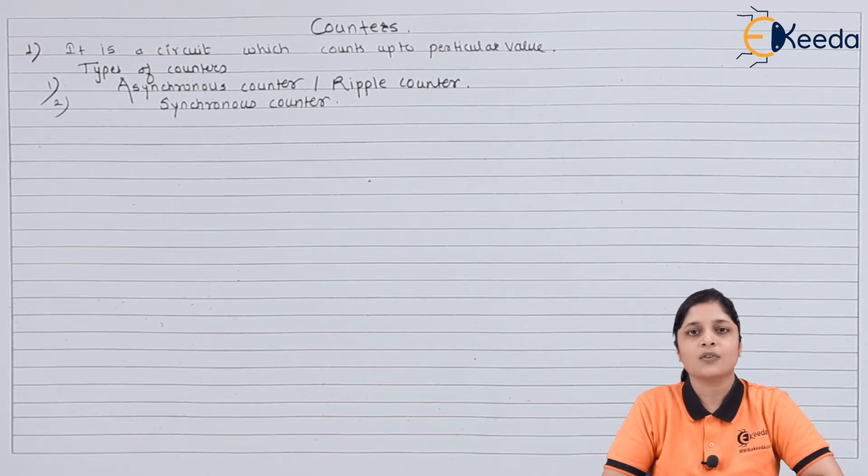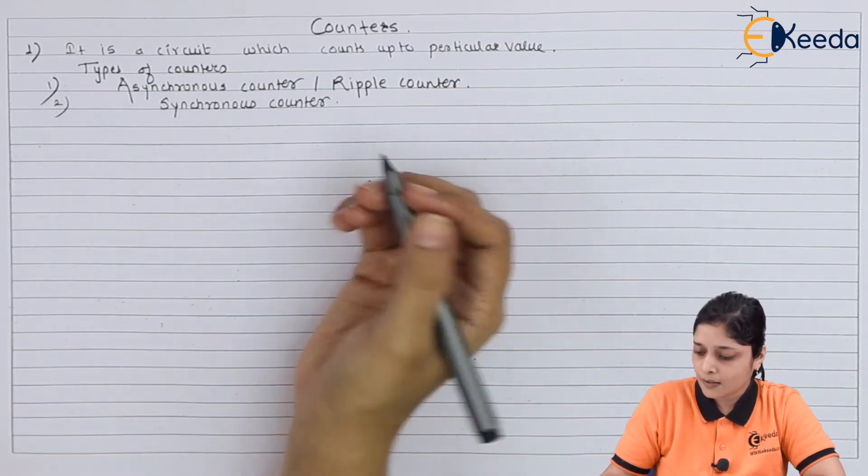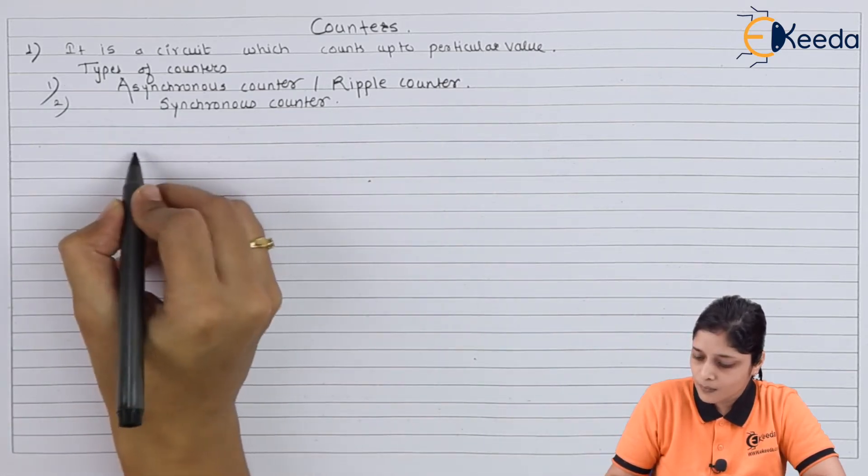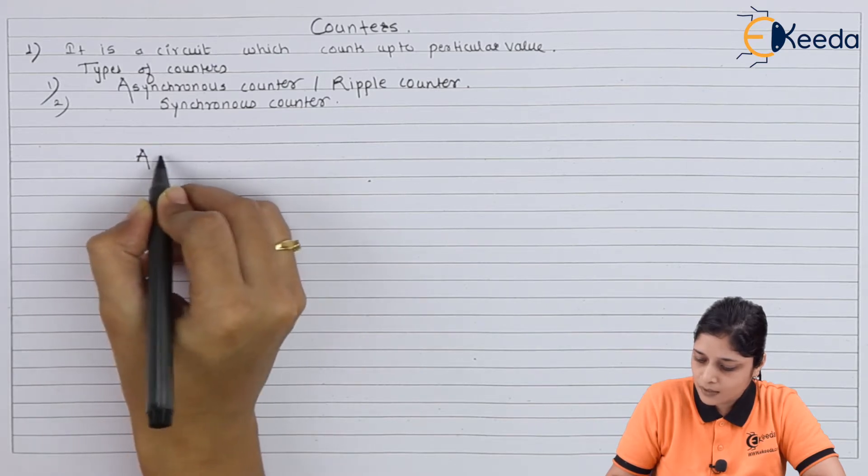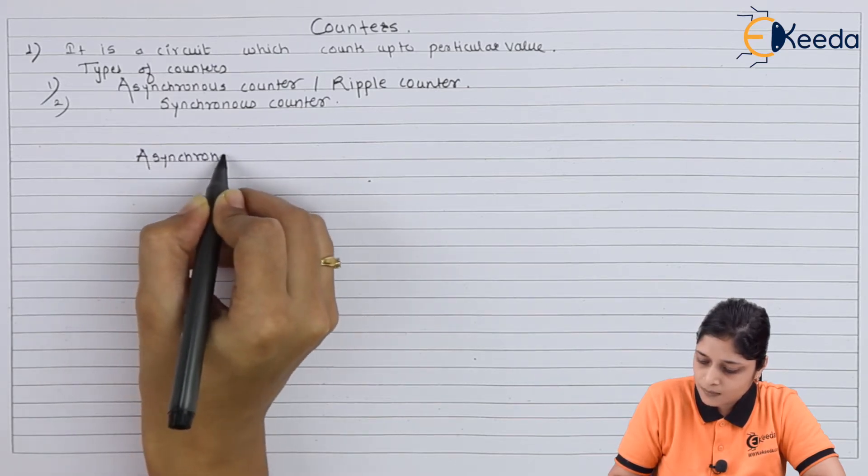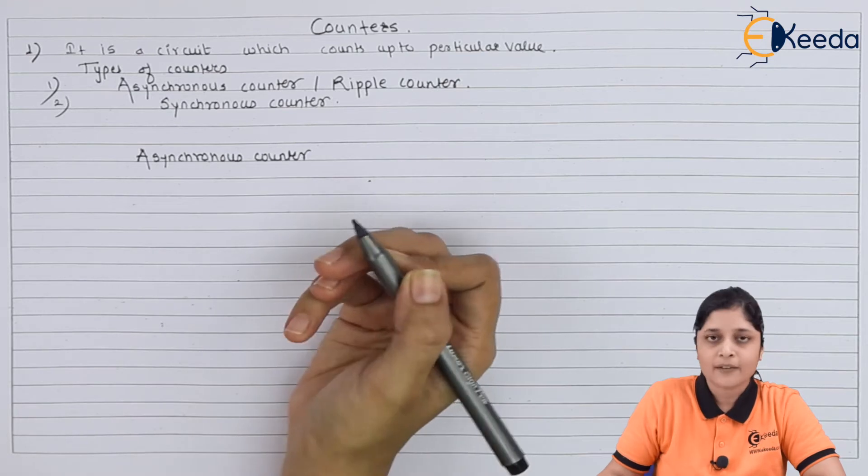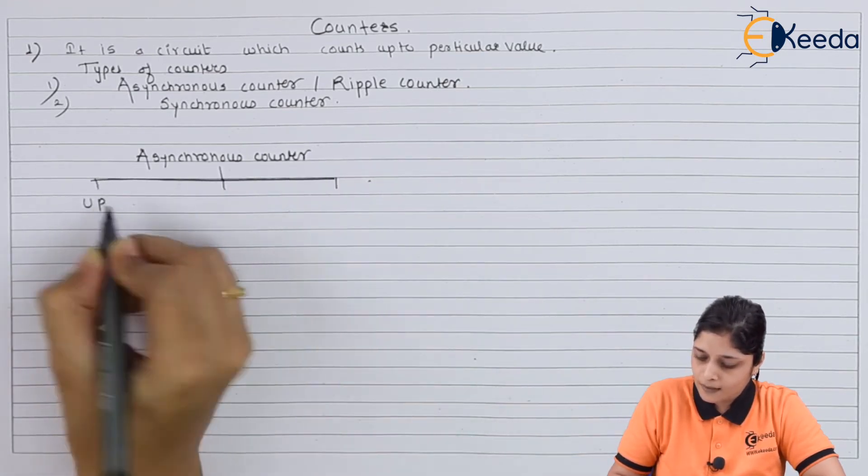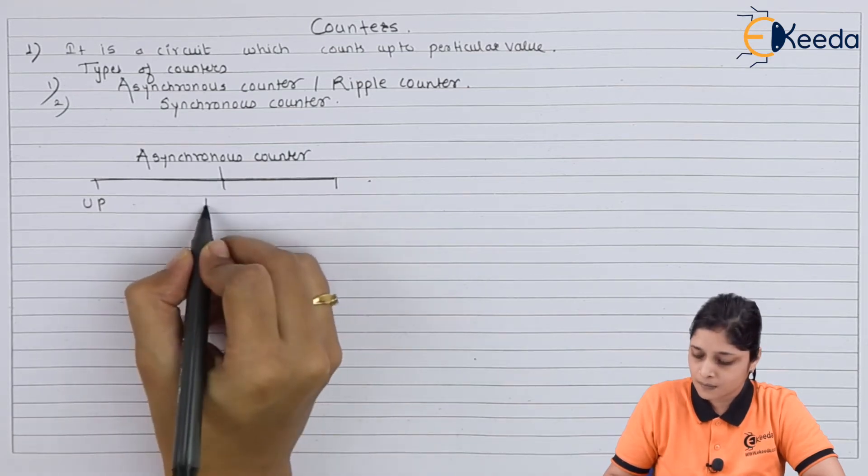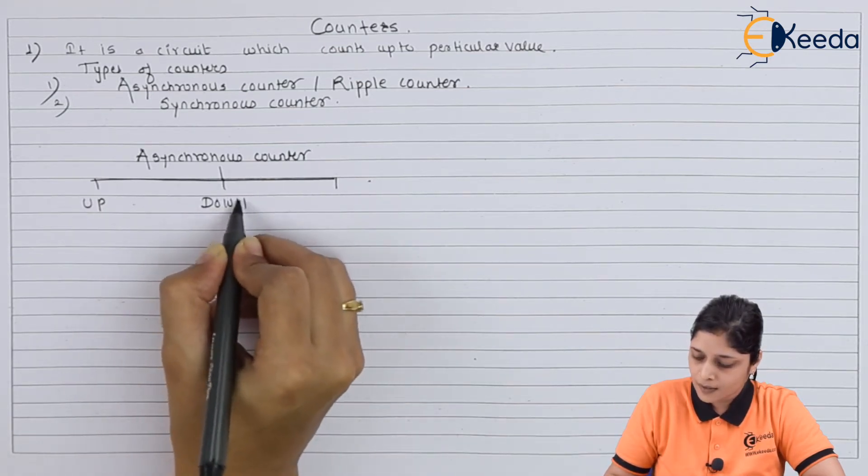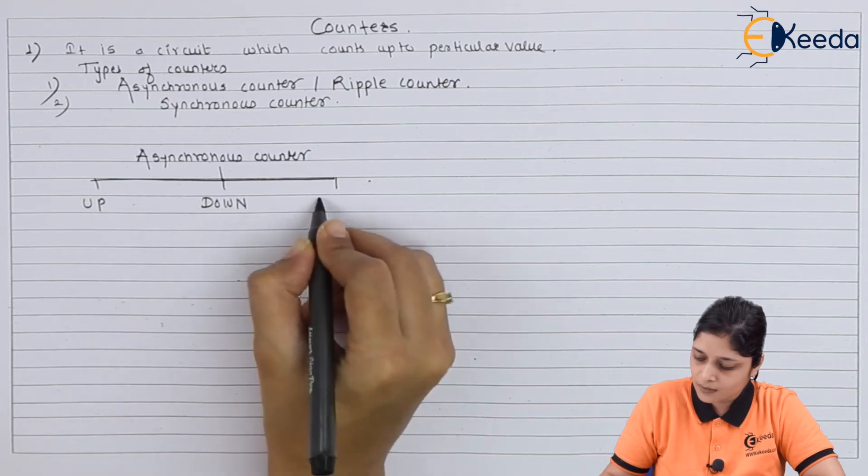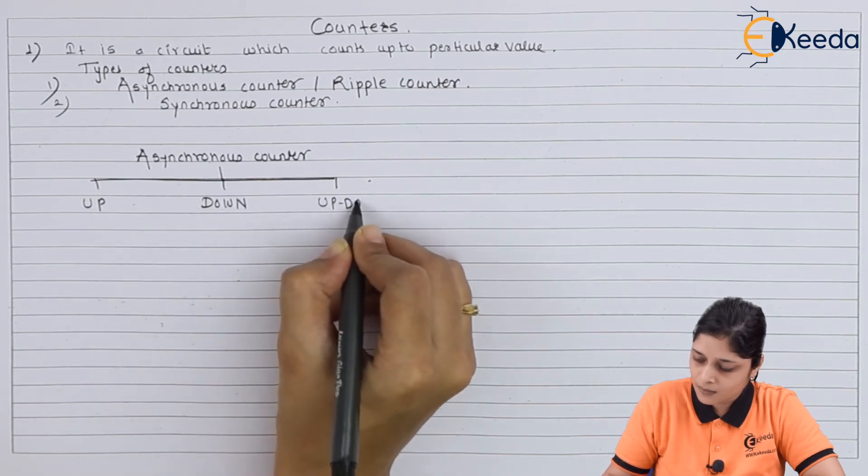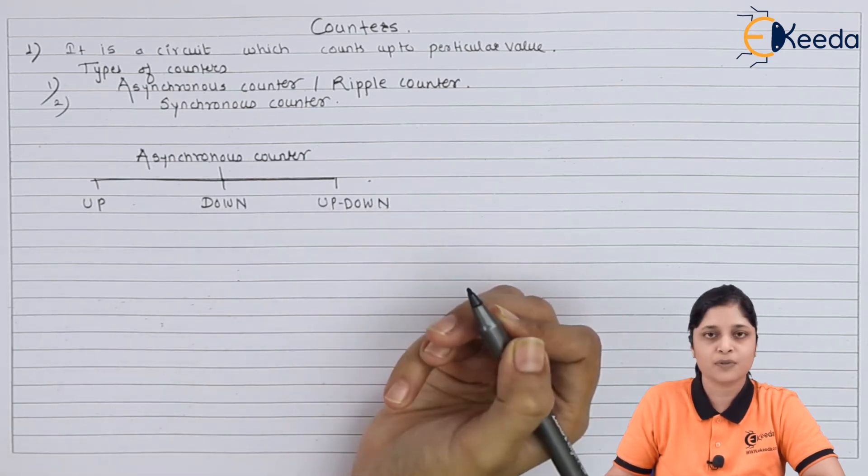Now further, asynchronous and synchronous counters are divided into three types. For asynchronous counter, we have three types: up counter, down counter, and up-down counter.